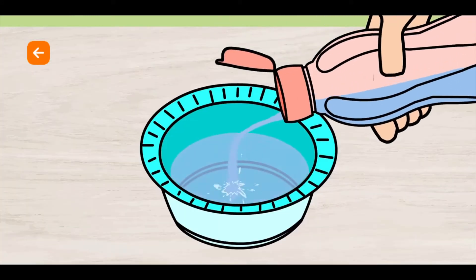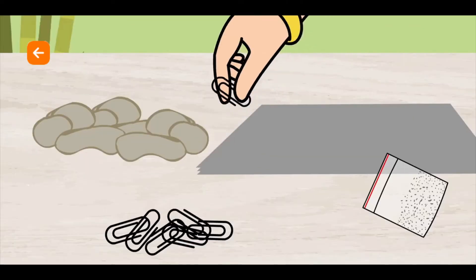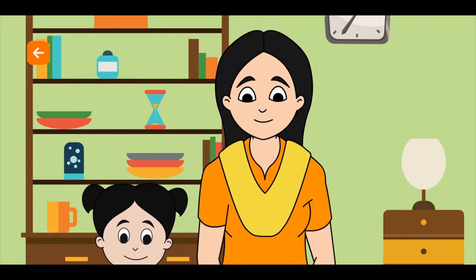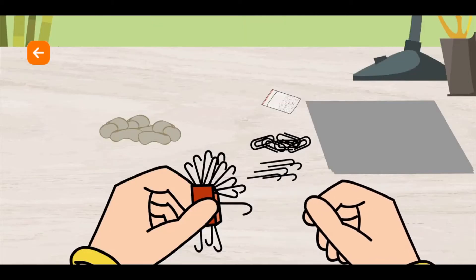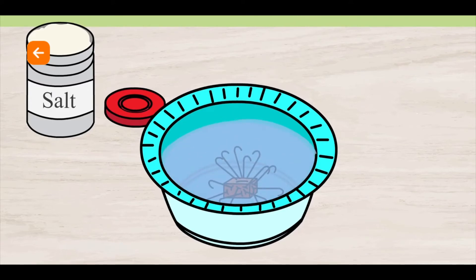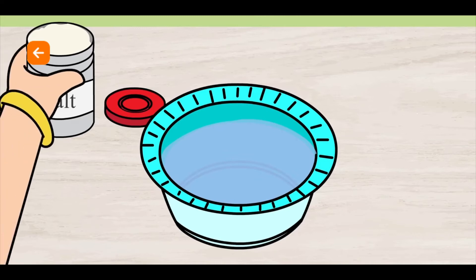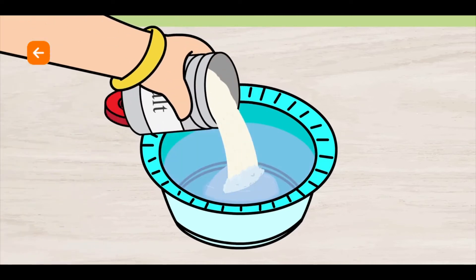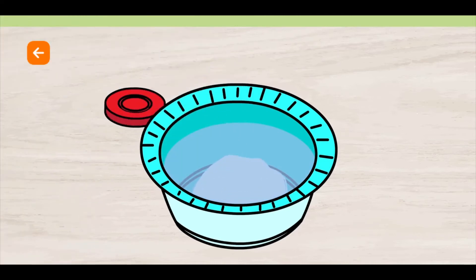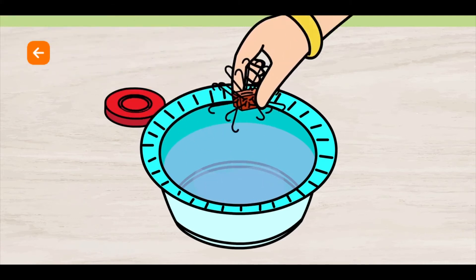Fill the bowl with water. Add the sponge piece in the water. Open the paper clips and straighten them. Attach the clips to the sponge piece. Put the sponge piece with clips in the water. Add some salt and water and mix it. Continue mixing salt and water till the sponge piece with clips starts to float again.